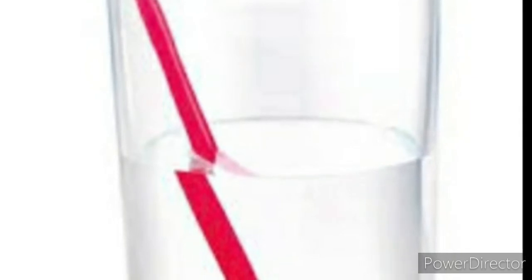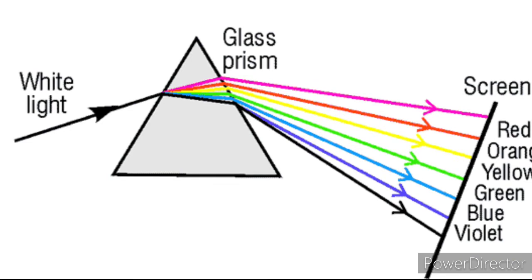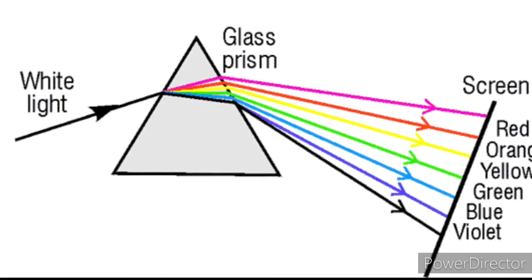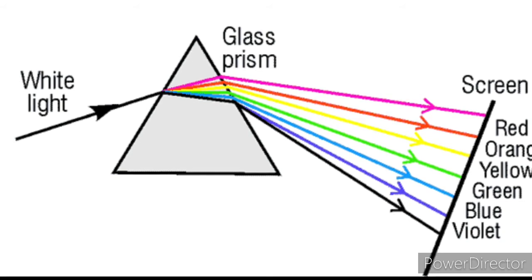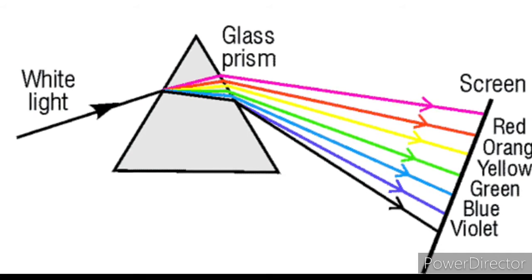The colors of the rainbow are also due to refraction. But you may ask how it's possible to see many colors — some of you would say you thought the sun was white in color. The sun is actually white in color, but white is actually a combination of several colors.